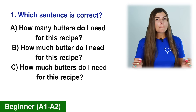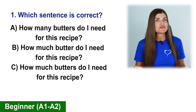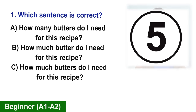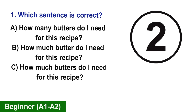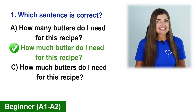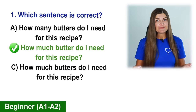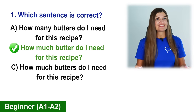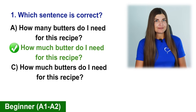How much butters do I need for this recipe? The correct sentence is B: How much butter do I need for this recipe?